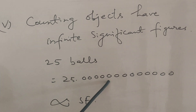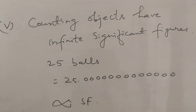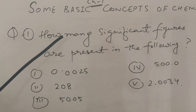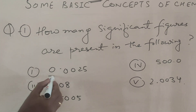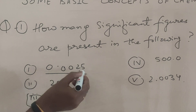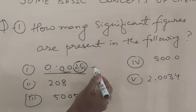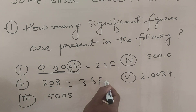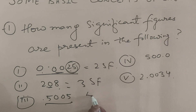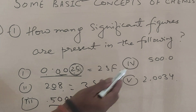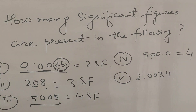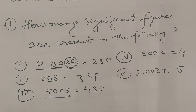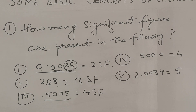Counting objects have infinite significant figures — for example, 25 balls can be written as 25.000000. Examples: 0.0025 has 2 significant figures; a number with zero between non-zero digits (like 10003) has 5 significant figures; numbers with trailing zeros after decimal have those zeros counted. If there are 4 digits including a trailing zero after the decimal, there are 4 significant figures, and a 5-digit number straightforwardly has 5 significant figures.